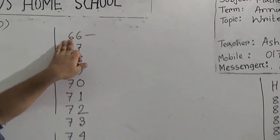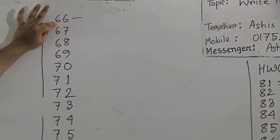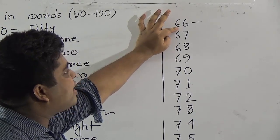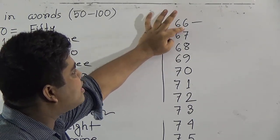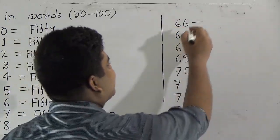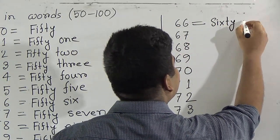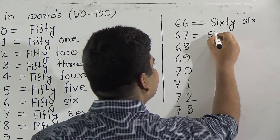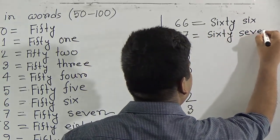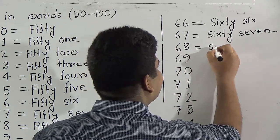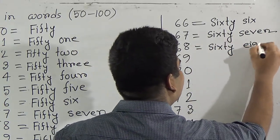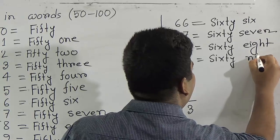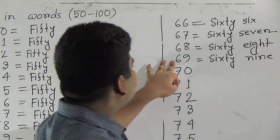My dear students, 66 is another interesting number because this number has 6 in both digits. So we write sixty and six — sixty-six — spelling: S-I-X-T-Y, S-I-X. Write 67, 68, 69. So write 69, and 60 is done.